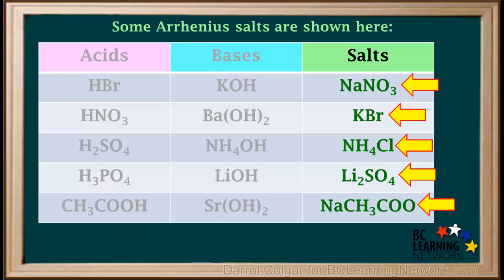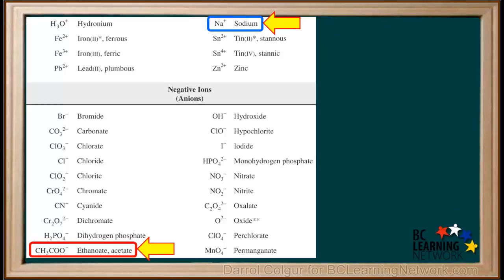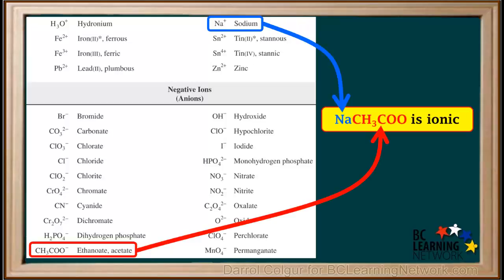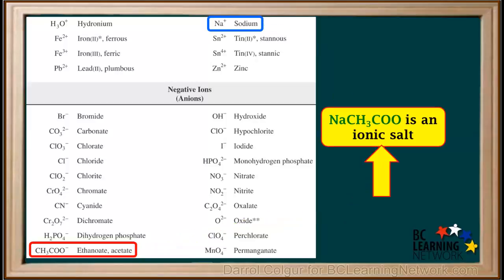In this column of the table, we see some salts. Notice they are all ionic compounds that neither start with H nor end in OH. The last one, NaCH3COO, looks like it's organic. However, since it starts with Na, we know that it must be a salt. We can find both Na+ and CH3COO- on the ion table. So we know that NaCH3COO, called sodium ethanoate, or more commonly sodium acetate, is ionic. And because it doesn't start with an H or end in an OH, it is an ionic salt.